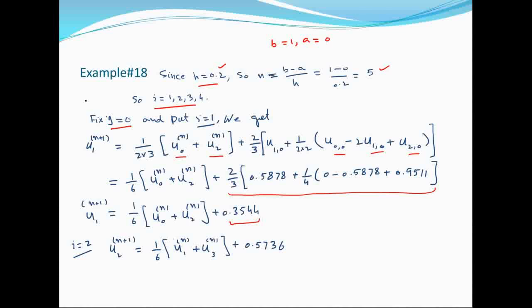इसी तरह i=2 के लिए calculate करते हैं। इसमें indices 0, 2 और 1, 3 आएंगे और numeric value 0.5736 आती है।